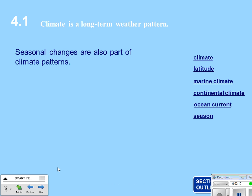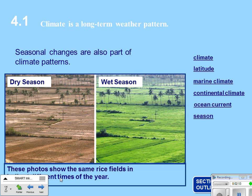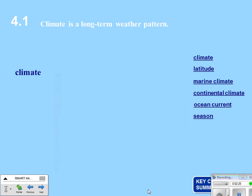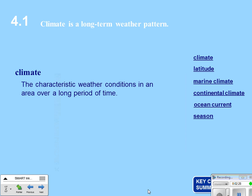Seasonal changes are also part of climate patterns. This picture shows rice fields: in the dry season everything is brown, versus the wet season when everything is green. Climate is the characteristic weather conditions in an area over a long period of time — climate is over a long period of time, whereas weather is what happens day to day.